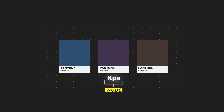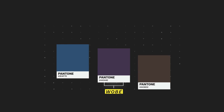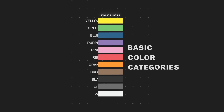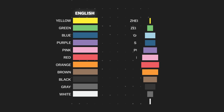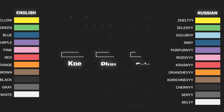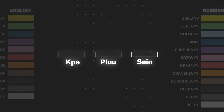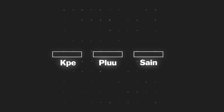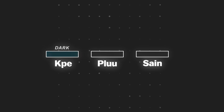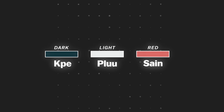That's because not all languages have the same number of basic color categories. In English, we have 11. Russian has 12. But some languages like Wobbe only have three. And researchers have found that if a language only has three or four basic colors, they can usually predict what those will be. So how do they do it?